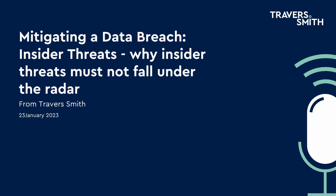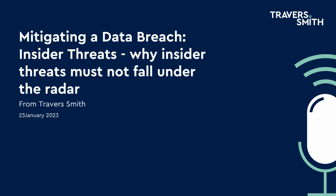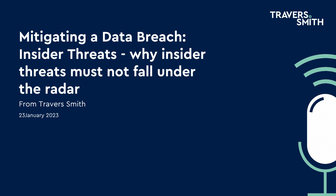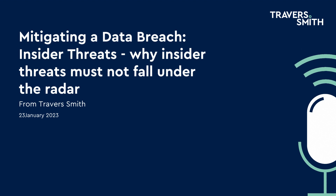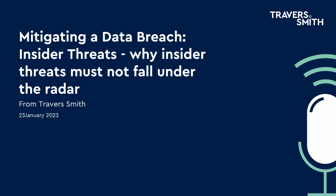After all, even where the threat originates from an external source, quite often their route in is via someone who has authorised access to your systems. For example, 94% of malware is delivered via email, according to a report by Verizon. Phishing, which according to the UK government's 2022 cyber breach survey is the form of cyber attack most disruptive to business, involves external bad actors using social engineering techniques to manipulate your people. So often your people are your last line of defence in the context of external threats too.